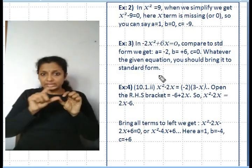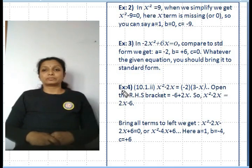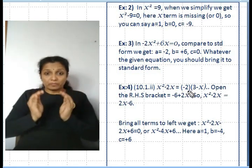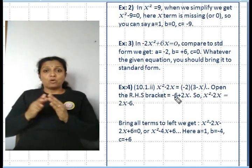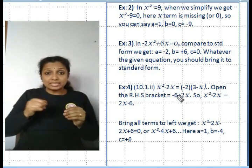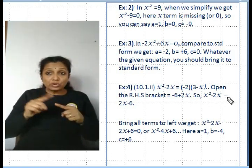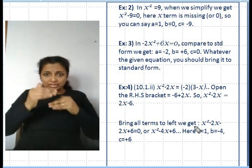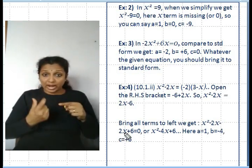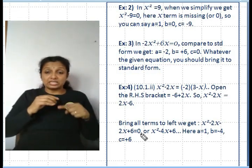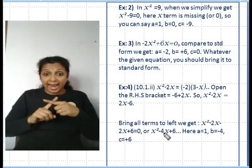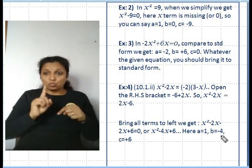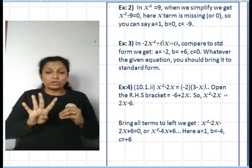Example 4: x² - 2x = -2(3 - x). Open the right-hand side bracket: you get -6 + 2x. So x² - 2x = 2x - 6, which gives x² - 2x - 2x + 6 = 0, or x² - 4x + 6 = 0. Therefore a = 1, b = -4, c = +6.